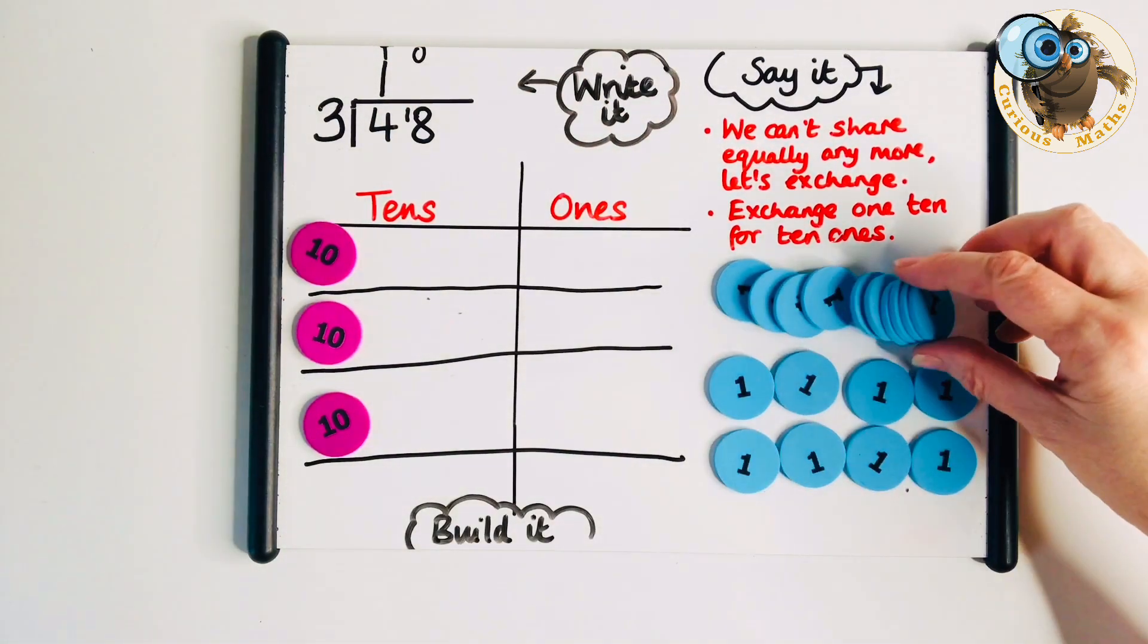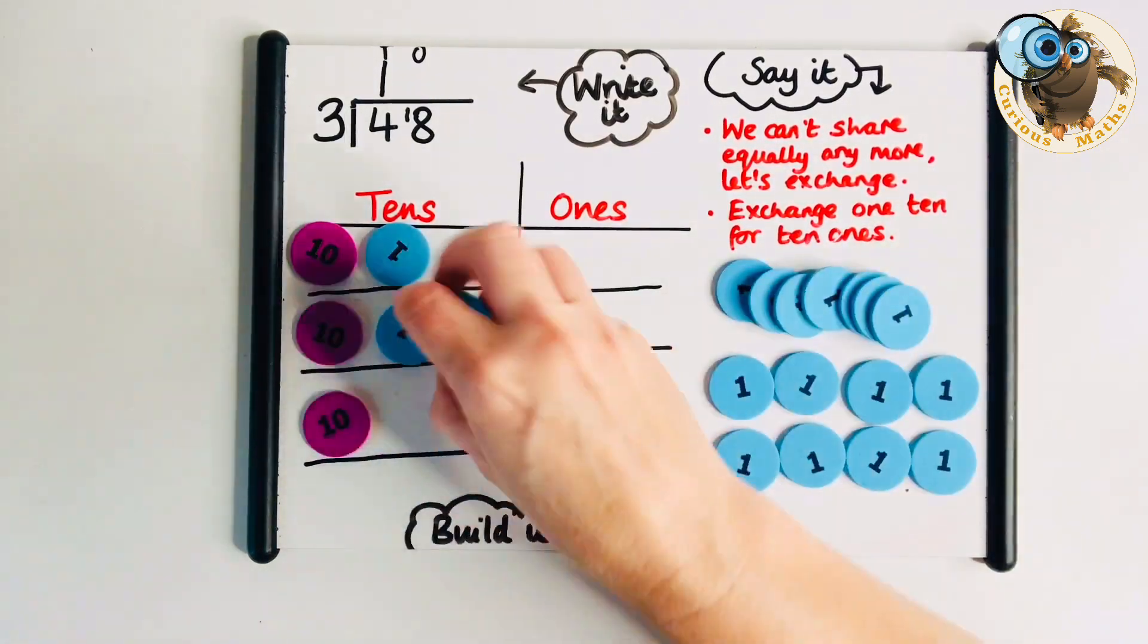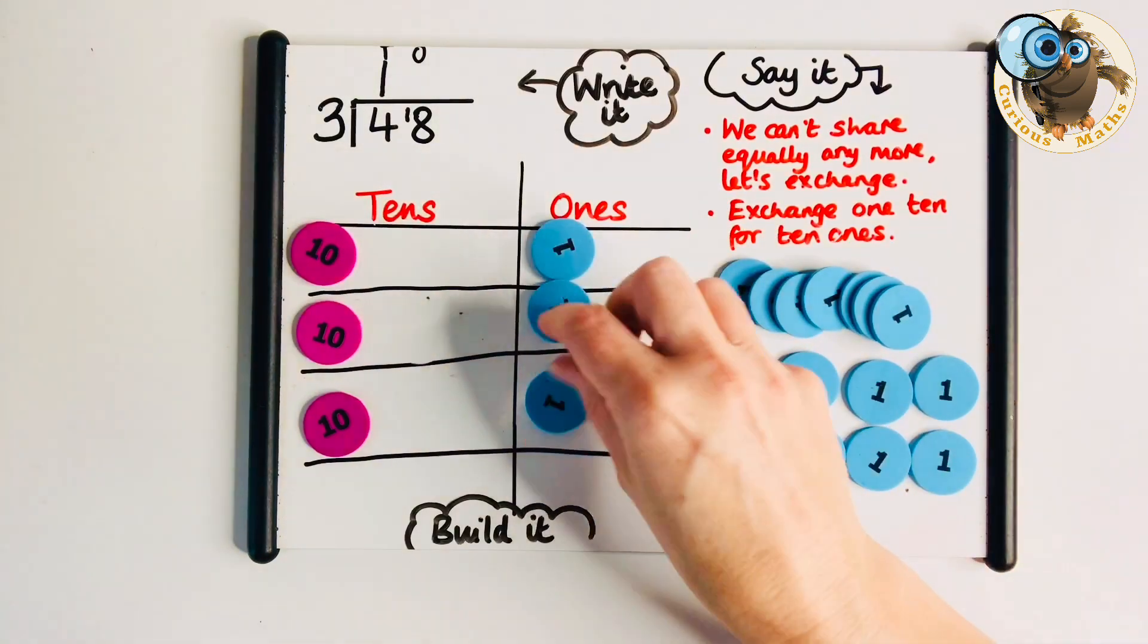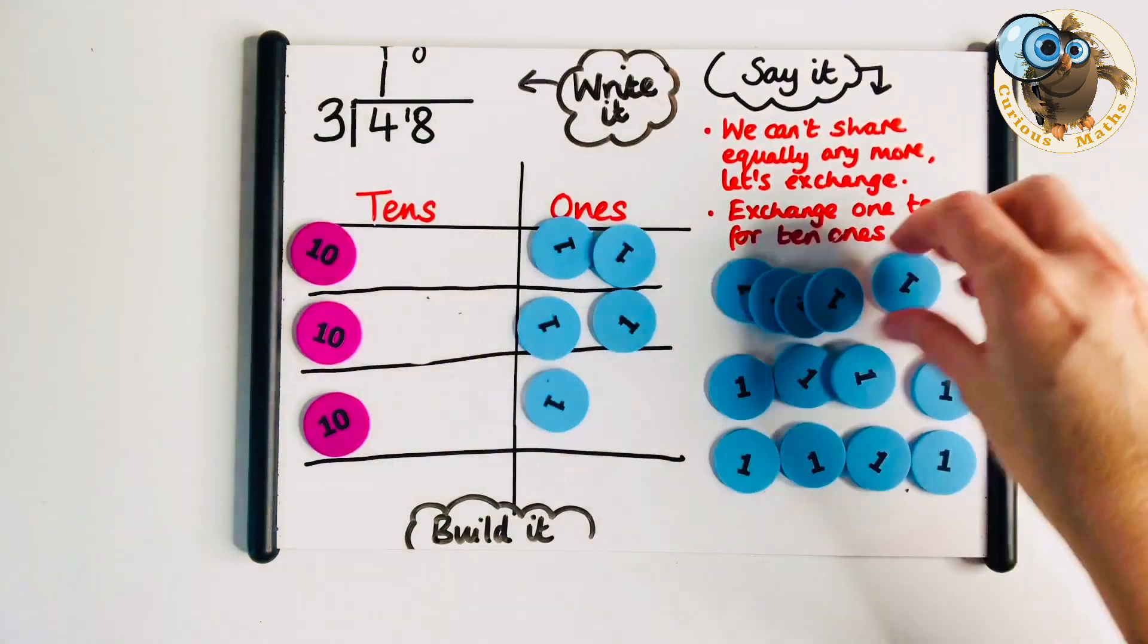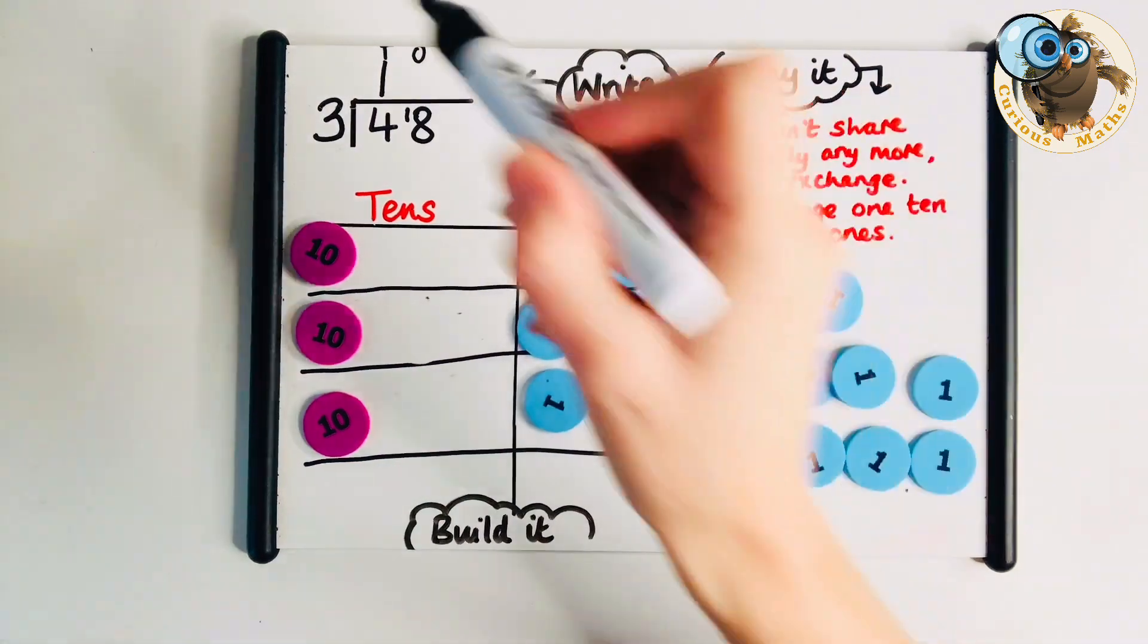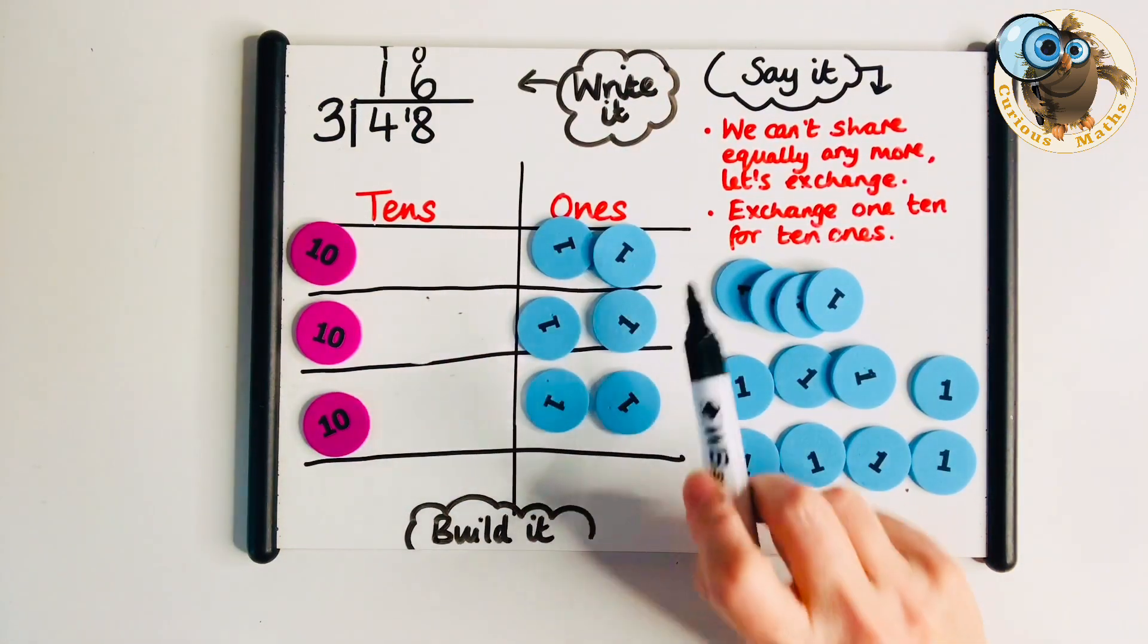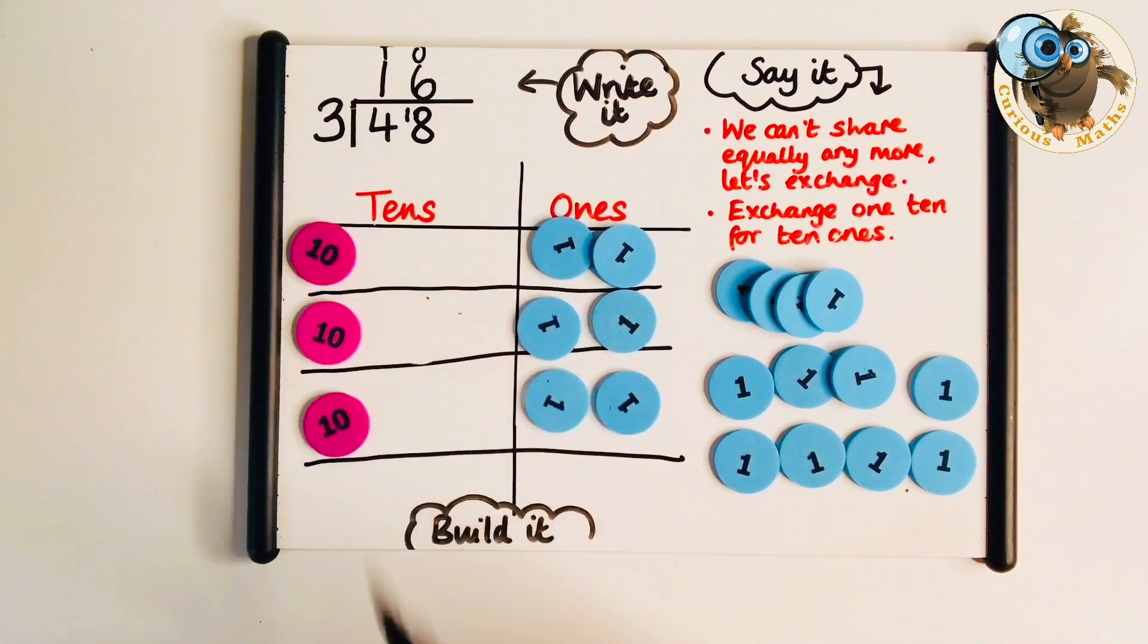Now we're going to share equally our 18 ones. At this stage children may have to go one at a time. Some may appreciate they can move more than one at a time. But the answer will be 16. Each person will have 16 in total if you share 48 between 3 people.